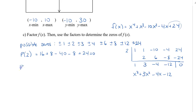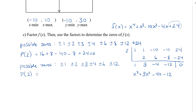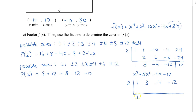My next possible zeros are the factors of 12: plus or minus 1, plus or minus 2, plus or minus 3, plus or minus 4, plus or minus 6, and plus or minus 12. Plugging in 1 won't give 0, so I'll try 2 again. When I plug in 2, I get 8, 3 times 4 which is 12, minus 8, minus 12 — the 8 and minus 8, and the 12 and negative 12 cancel to give me 0. So 2 is a factor again. We do synthetic division on this new polynomial with coefficients 1, 3, negative 4, and negative 12, and we get a remainder of 0.